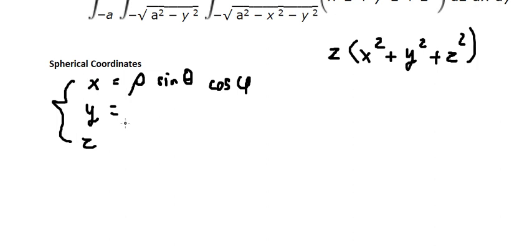The next one we have rho sine theta sine phi. And the next one, z equals rho cosine theta.